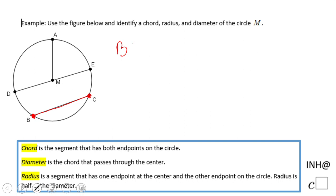Now some of you may look and say, but what about DE? Yeah, DE is also a chord, but the best name to identify it, in fact, is a special type of chord. Let me see here, special. It goes through the center, so that makes it a diameter.